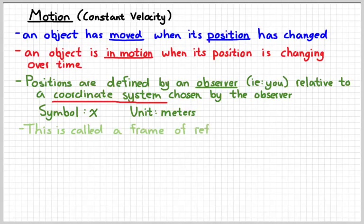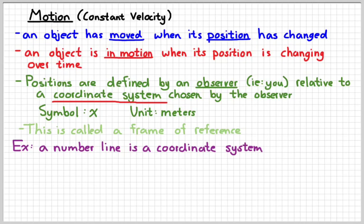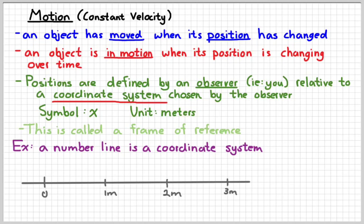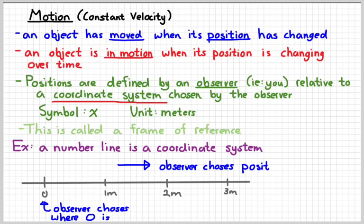The common way to describe this idea is a frame of reference. A frame of reference gives us a coordinate system with which to measure, and a system of measurement for it. A number line, like you learned in math, is an example of a coordinate system — there are positions and a particular starting point, or origin. You, as the observer, get to choose where the origin is. We also define a direction: you choose which direction is given positive values of position, and the opposite direction will be given negative values of position.